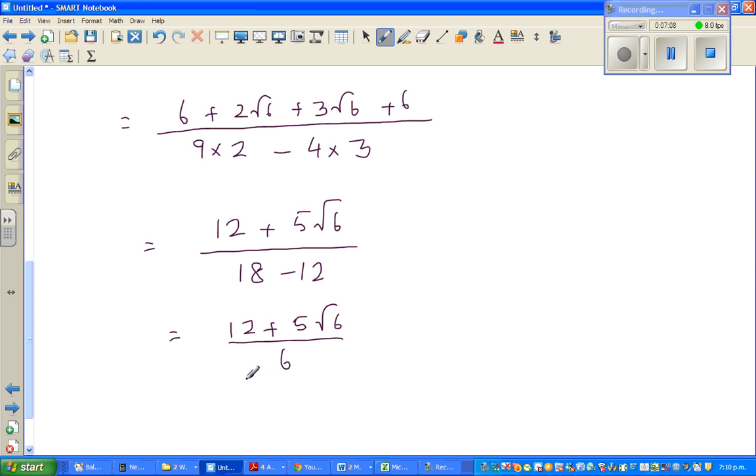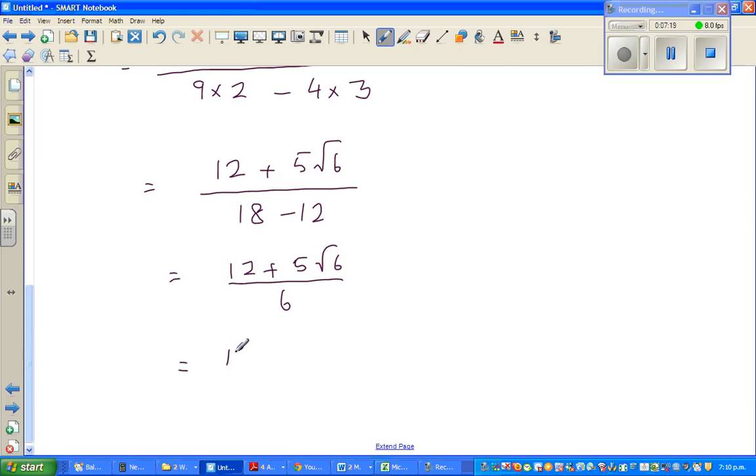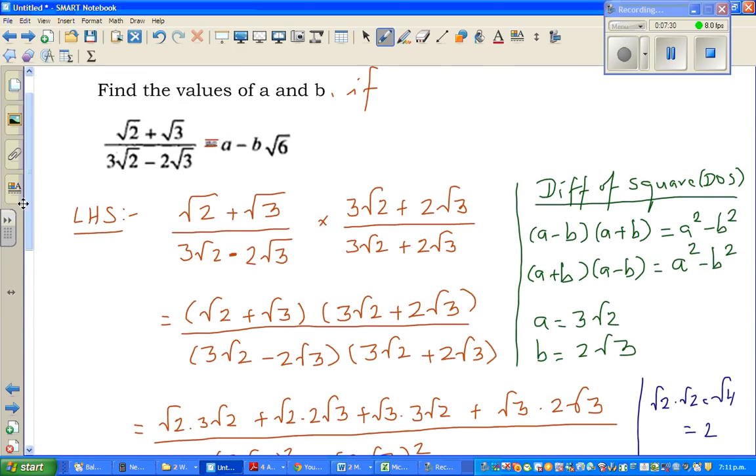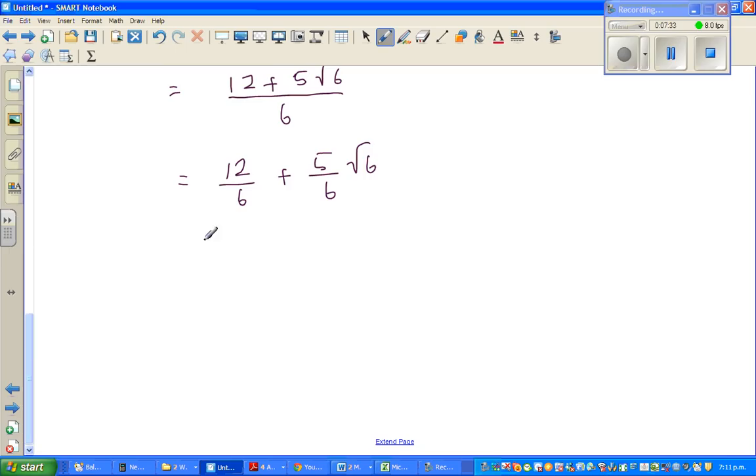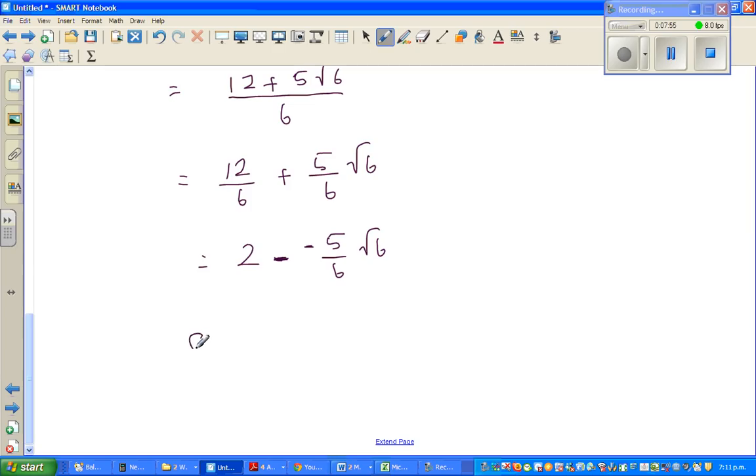So I can factor out, now I want to write this as this form, a minus b root 6. So I don't want to disturb this root 6. So can I write this as 12 over 6 plus 5 over 6 root 6. Now, they have put a minus to confuse you. So this minus can be taken care by, this is nothing but 2 minus, or take away, minus 5 over 6 root 6. Because minus and minus gives you plus. So they're asking you, and that's what they want to write. So your a, in other words, your a is 2, and your b is minus 5 over 6.